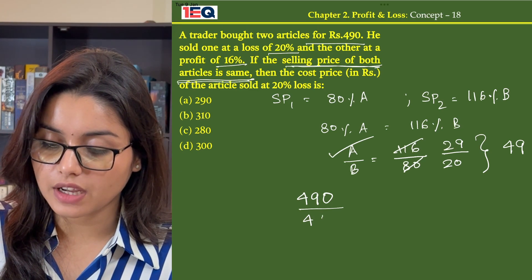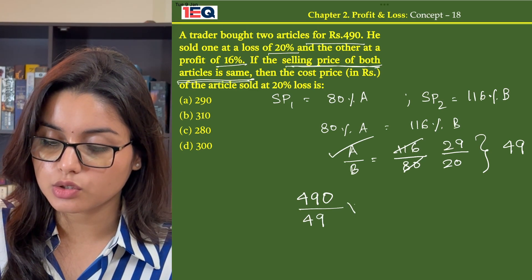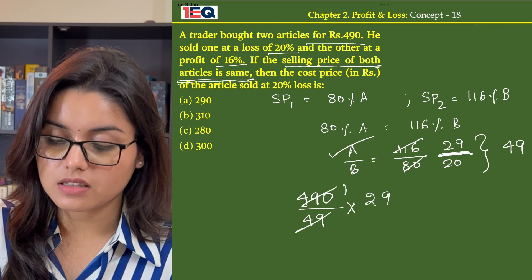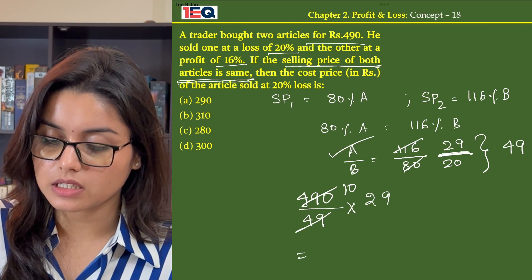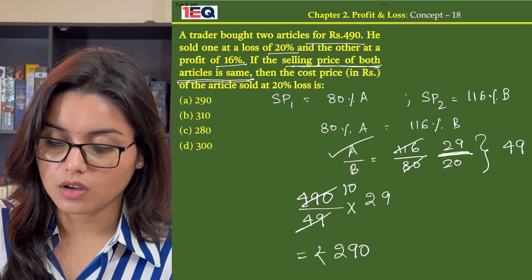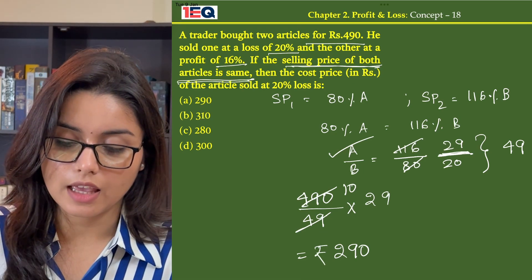So 490 divided by our assumed total into 29. 49 tensa and 10 into 29 gives us Rs.290. So our answer is option A.